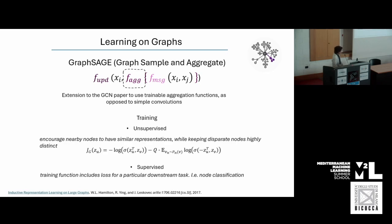One interesting aspect of GraphSAGE is that it was initially proposed as an unsupervised learning problem. The way they train the network is by encouraging nearby nodes to have similar representations — the learned representations are encouraged to be as similar as possible when nodes are closer together in the graph, and as different as possible when far apart. They also explain in the paper that you can add a supervised learning term to the training function, where you can add known clusters or supervised predictions to the training loss to learn embeddings useful for a specific task.